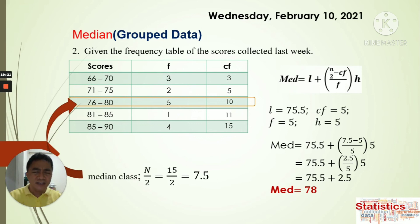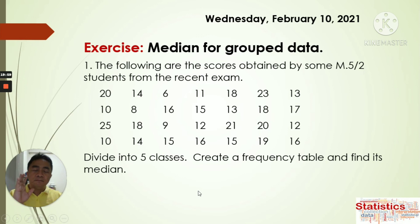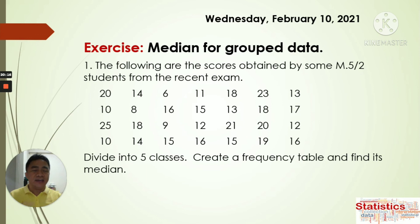I hope you understood our two examples on finding the median for grouped data. For today's exercise, you are given scores from Grade 5 students from a recent exam. Divide the data into 5 classes, find the range and class interval, create a frequency table, and find the median. Please complete your full solution. That's all for today — see you next time, bye!